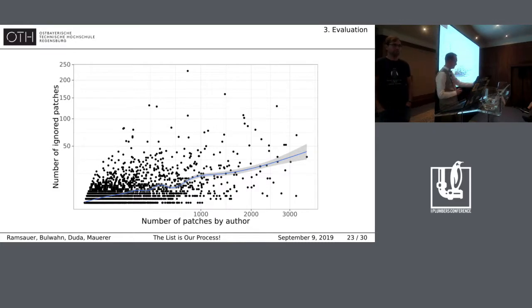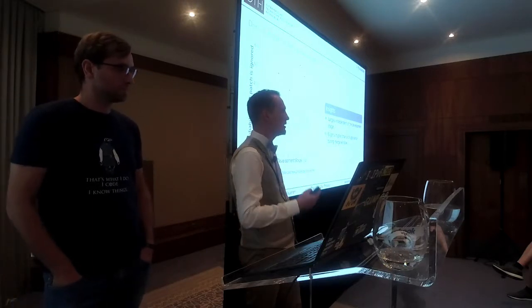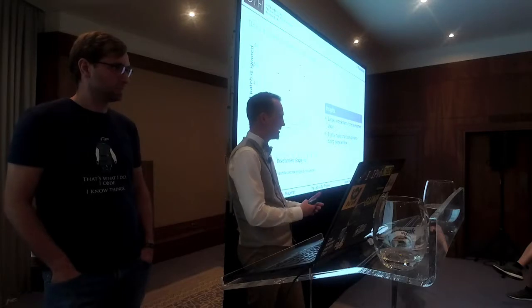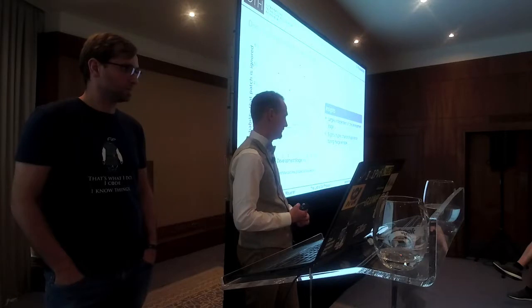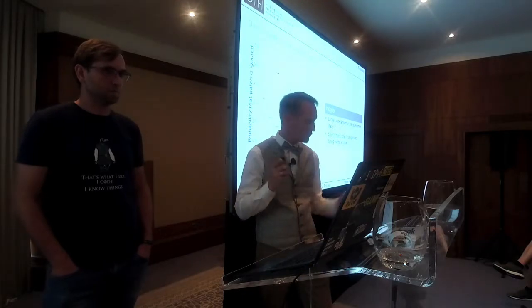An audience member asked: what does tracking ignored patches do for the confidence of patches in the kernel, given an ignored patch is by definition not in the kernel? It tells us something about the process — whether the community as a large is following the process of giving feedback until a patch is in the kernel, which is the core essence of the process. That's actually the question we have for you in the discussion: what do these numbers tell us, is that good or bad? We don't have any interpretation — we just have the data.